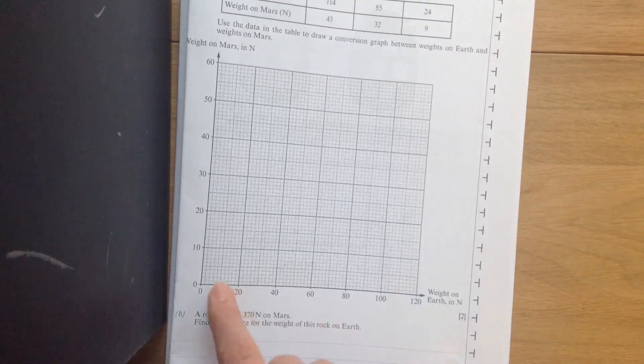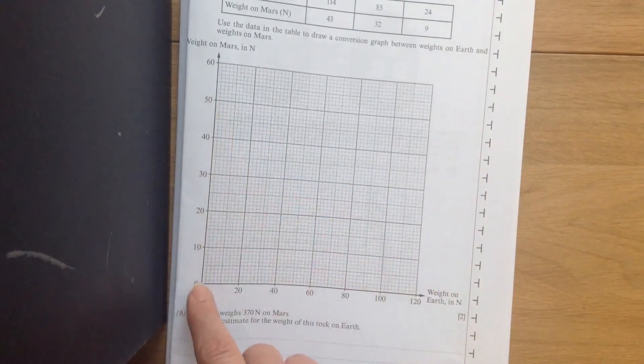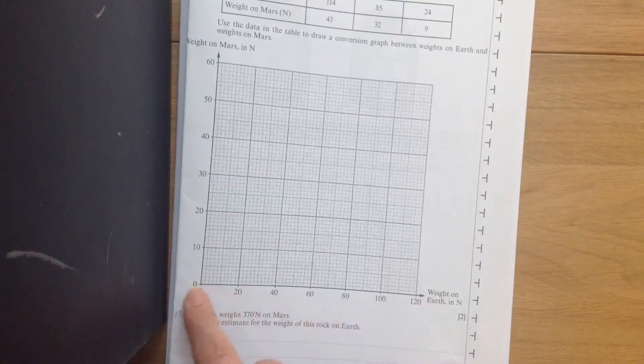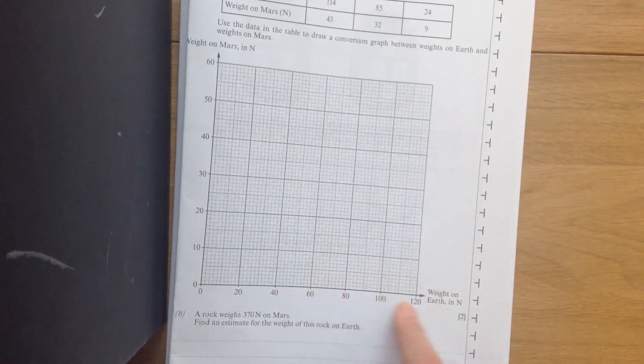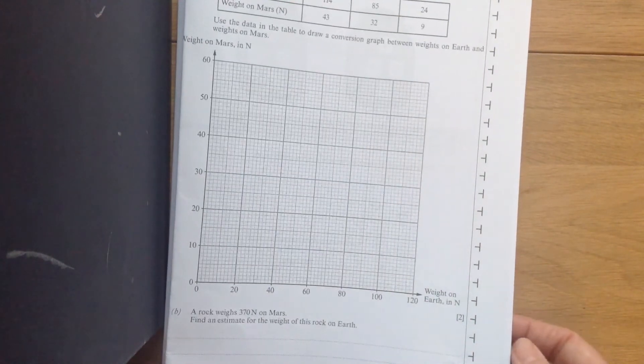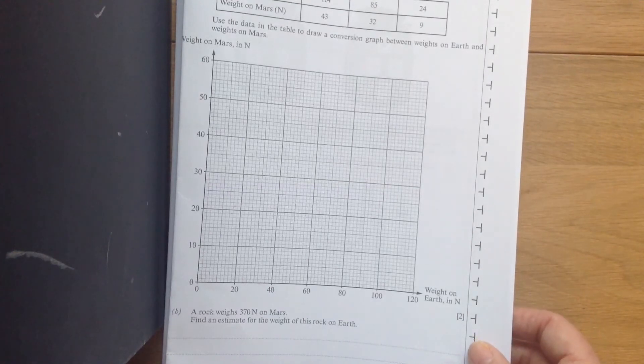Looking at this one for example, the y-axis is going up in tens, so each small division is one, but the x-axis is going up in twenties, so here each small division is two. They often do that, put different scales on both axes. Make sure you check and understand the scales before you start the question.